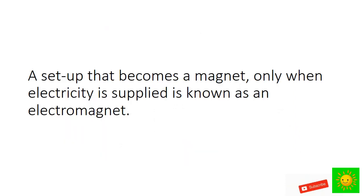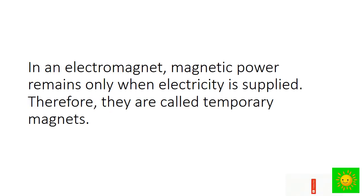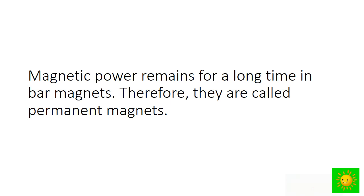A setup that becomes a magnet only when electricity is supplied is known as an electromagnet. In an electromagnet, magnetic power remains only when electricity is supplied, so they are called temporary magnets. Magnetic power remains for a long time in bar magnets, so they are called permanent magnets.